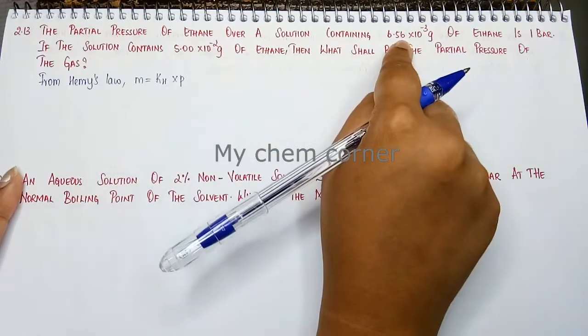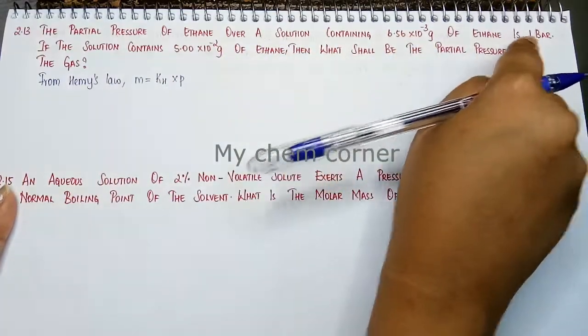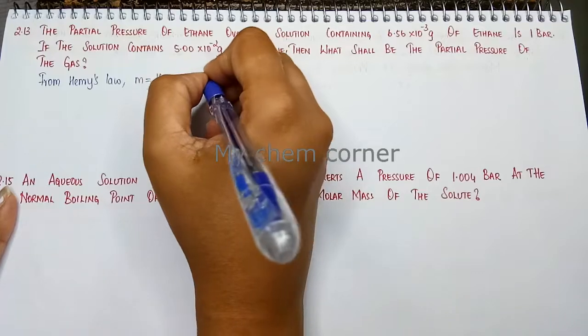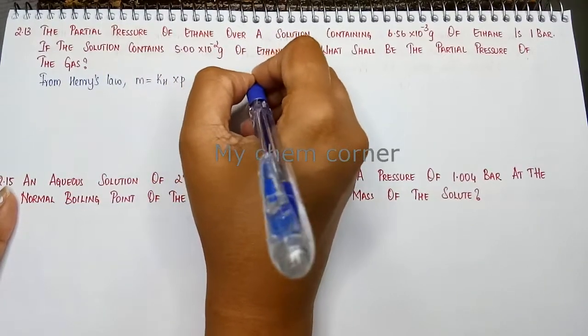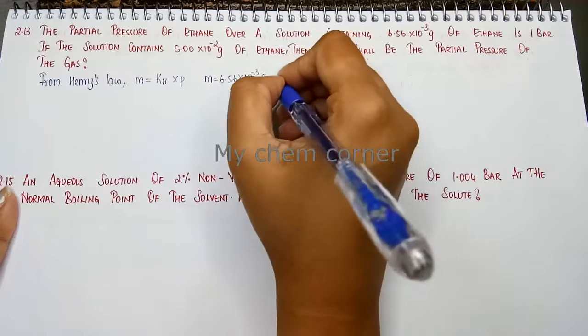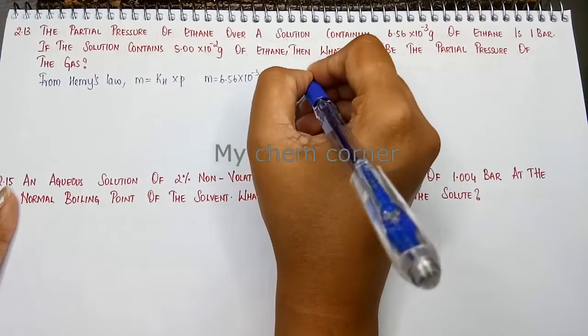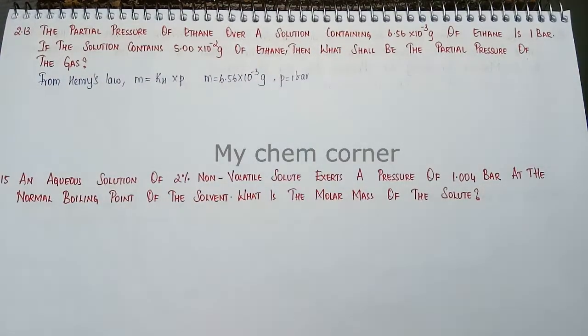Now, in the first case, what is given to us? Mass is given, pressure is given. So we can say that mass is 6.56 × 10⁻³ grams and pressure is given as 1 bar.